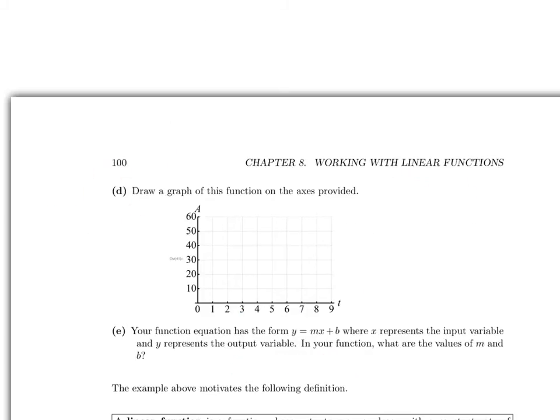Okay, let's have a look at Part D. Draw a graph of this function on the axes provided. Well, we started with 56 grams of substance. If we go out one week, we lose 6 grams. That brings us down to 50. If I go out another week, we lose another 6 grams, which brings us down to 44. If we go out another week, we lose another 6 grams, bringing us down to 38. We'll do this one more time. If we go out one more week, we drop another 6 grams, which brings us down to 32. And we can continue this trend. If we connect the dots, we see that we arrive at a straight line.